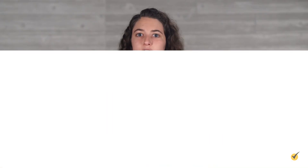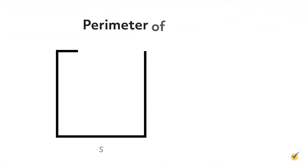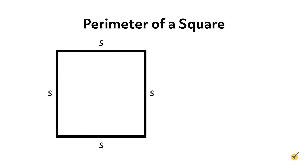To find the perimeter of a square, add up the four sides. Since all four sides of a square are equal, we can also just multiply the length of one side by four. This gives us a formula for the perimeter of a square: if a square has sides of length s, then the perimeter is P equals s plus s plus s plus s, or P equals 4s.